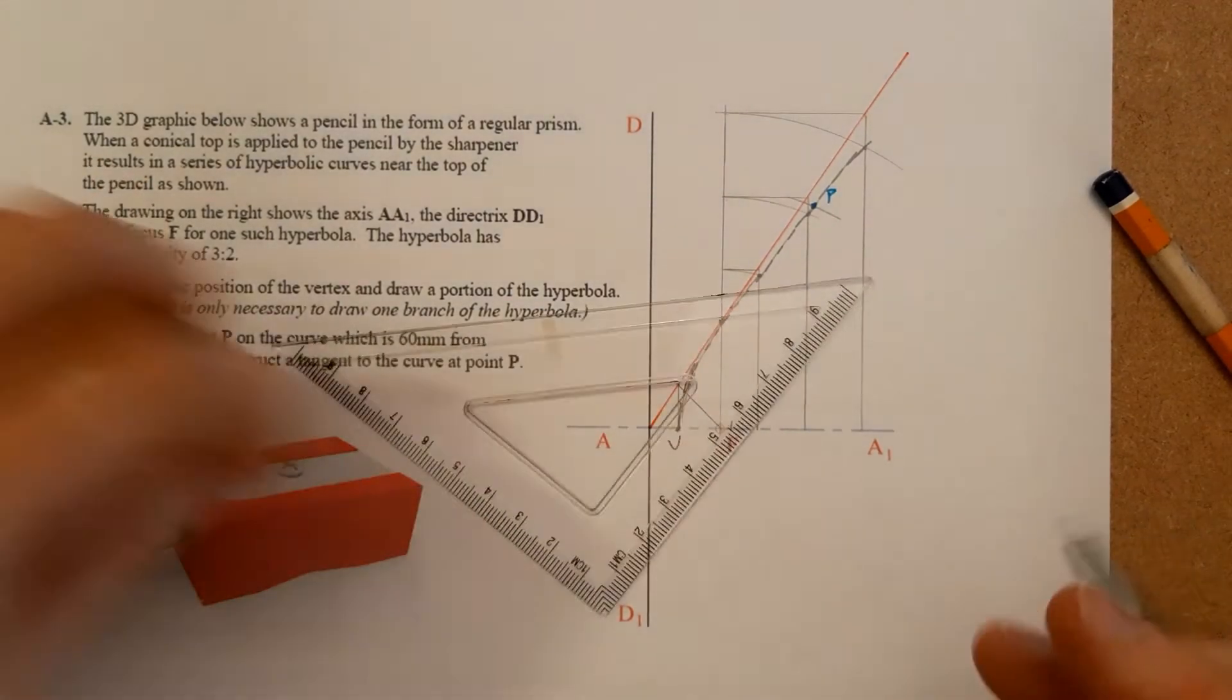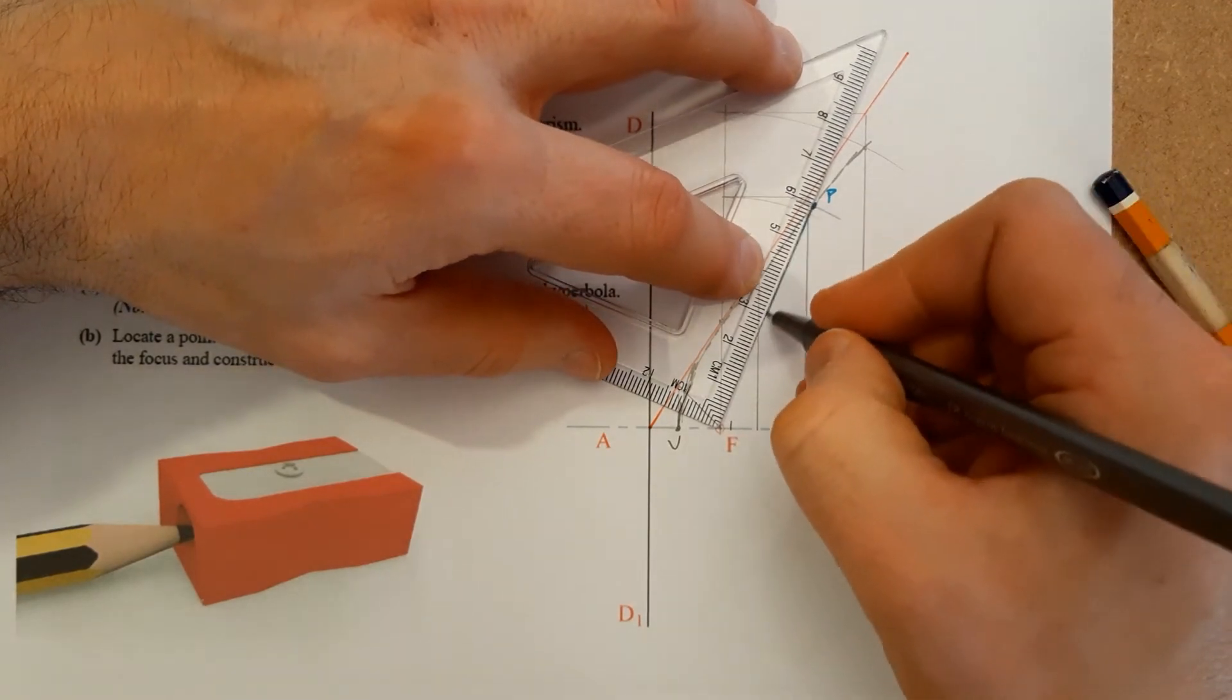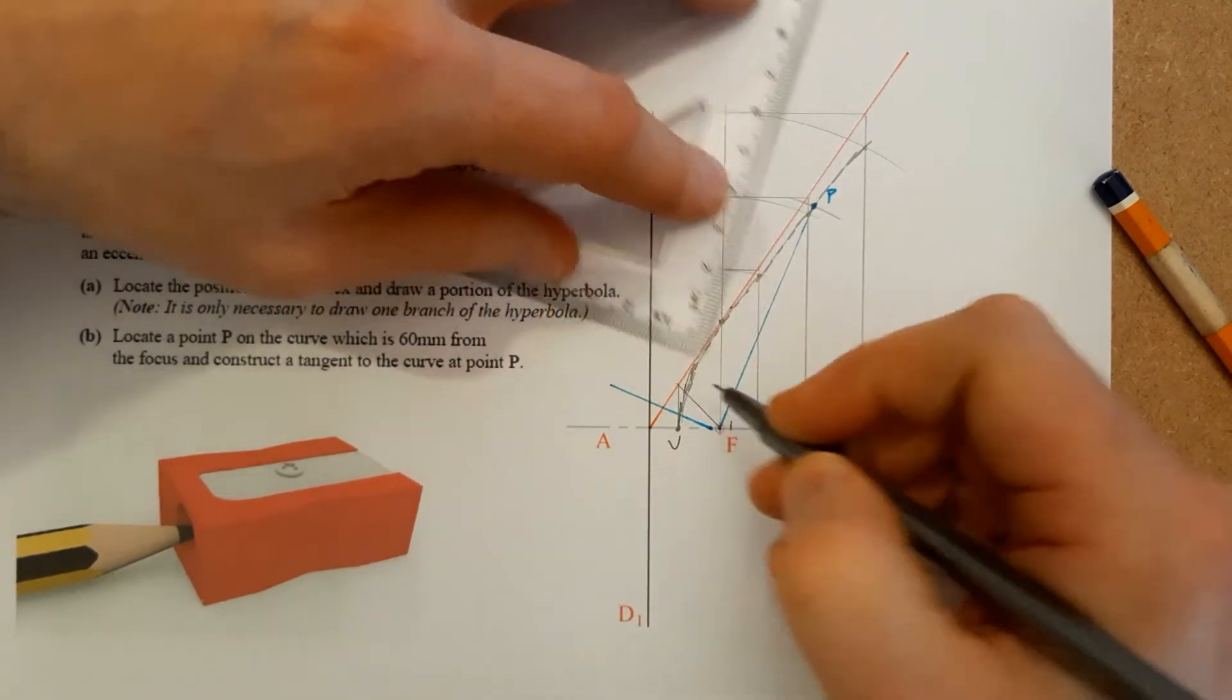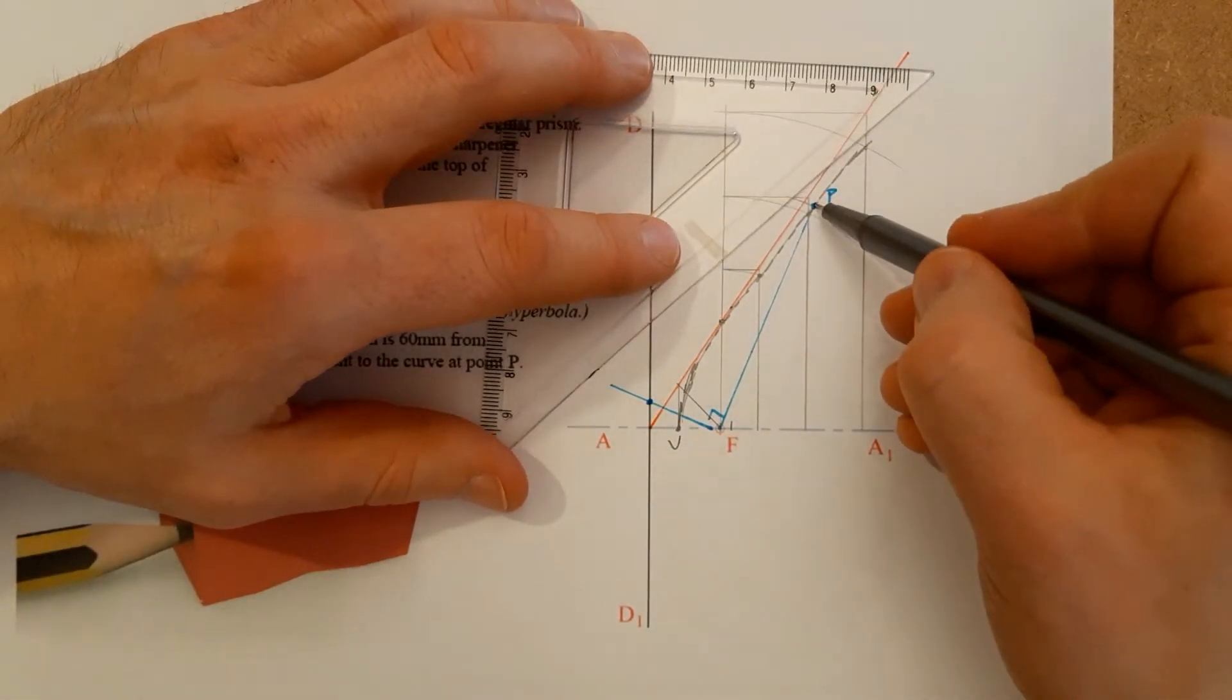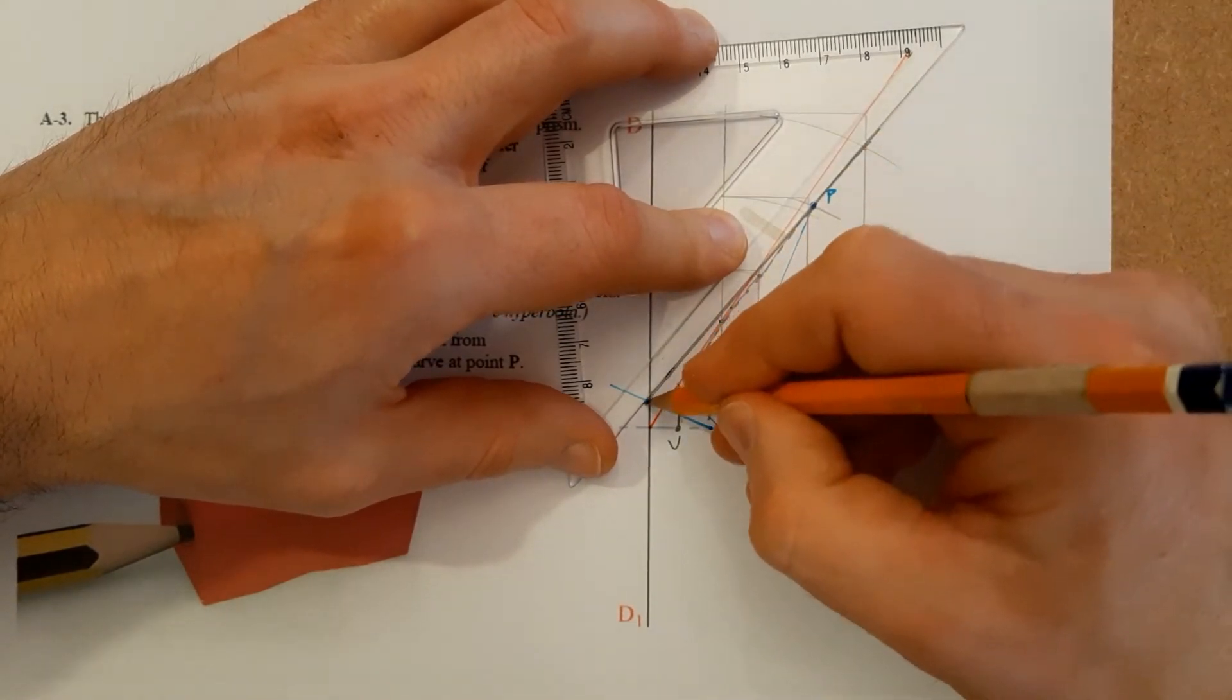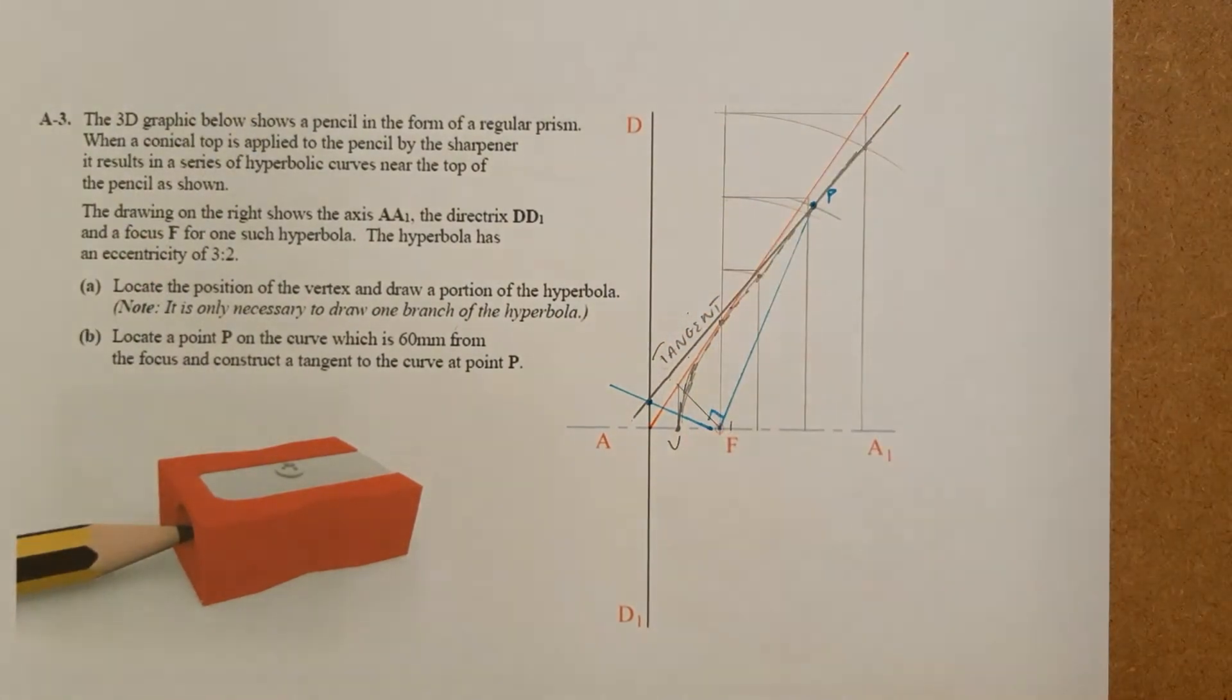Now the handiest way, and it works for all the conics, to draw a tangent is to join it down to the focal point. Come off perpendicular to that then, and where it crosses the directrix there will give you a point on the tangent. So now we have two points. We can just go ahead now and draw in our tangent there. And that's question A3 done.